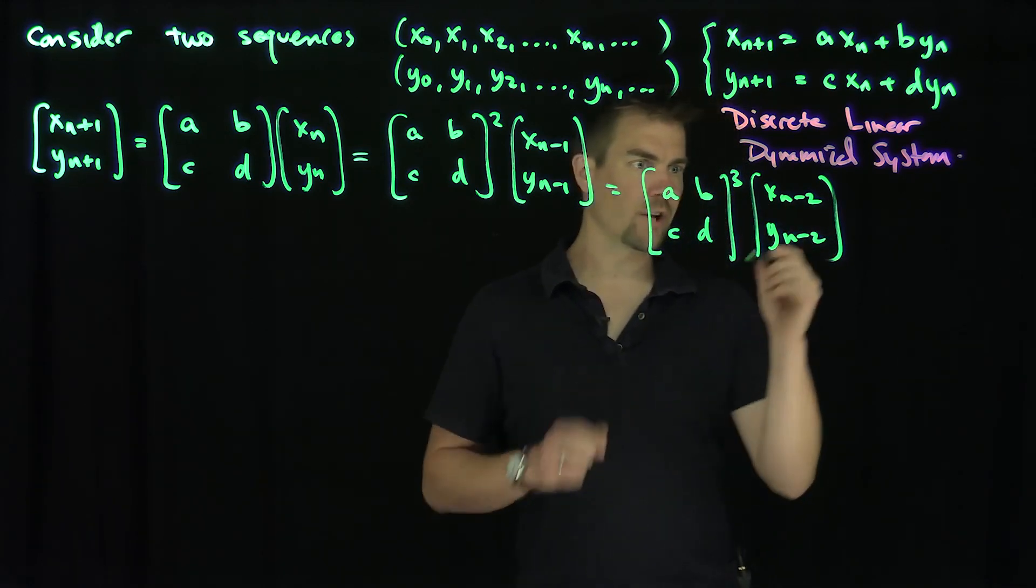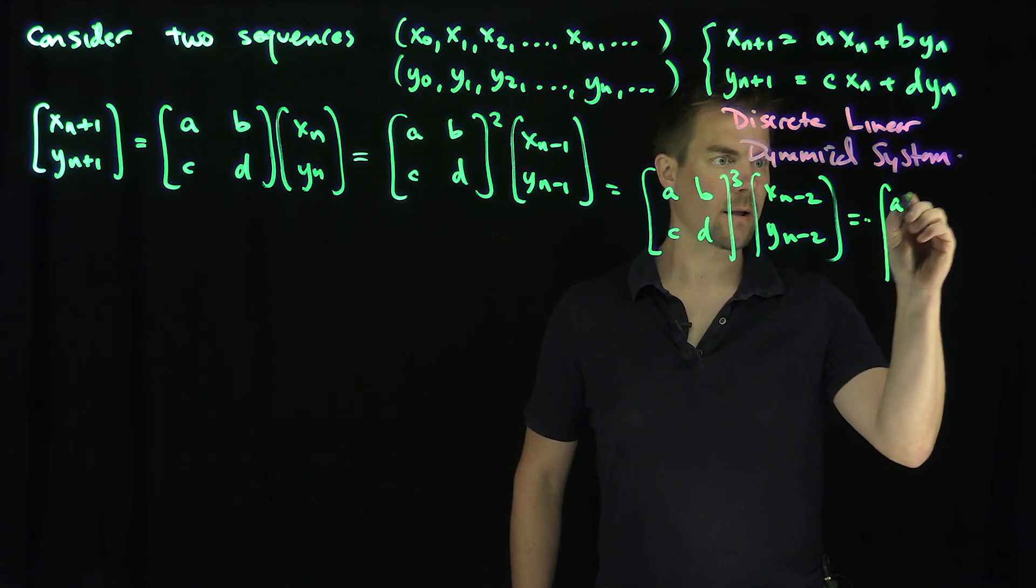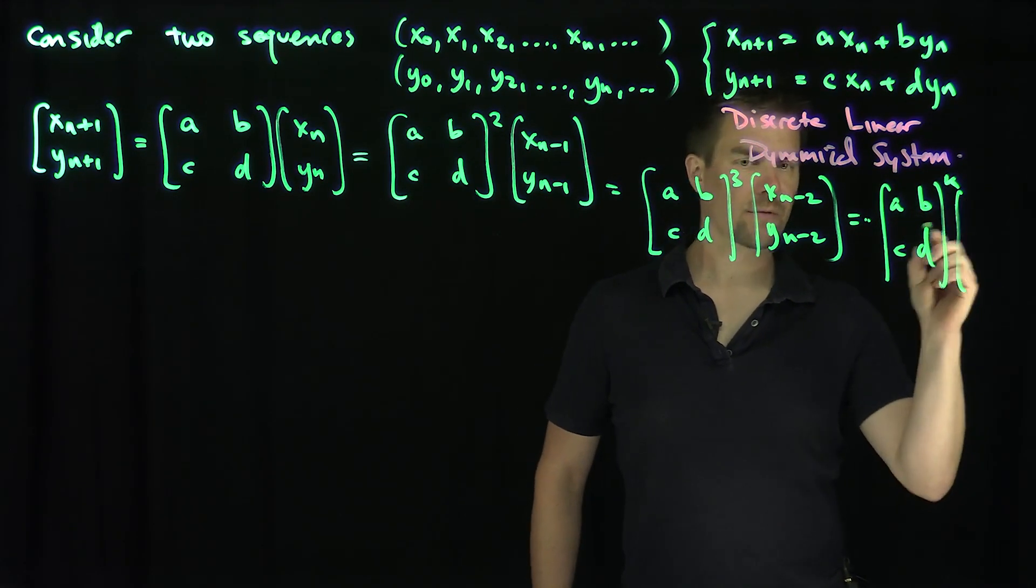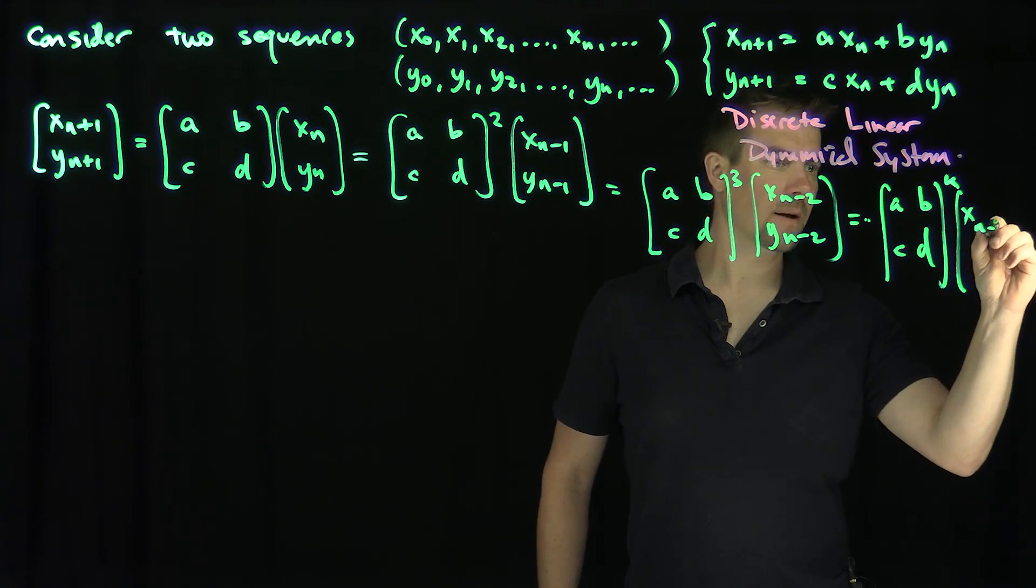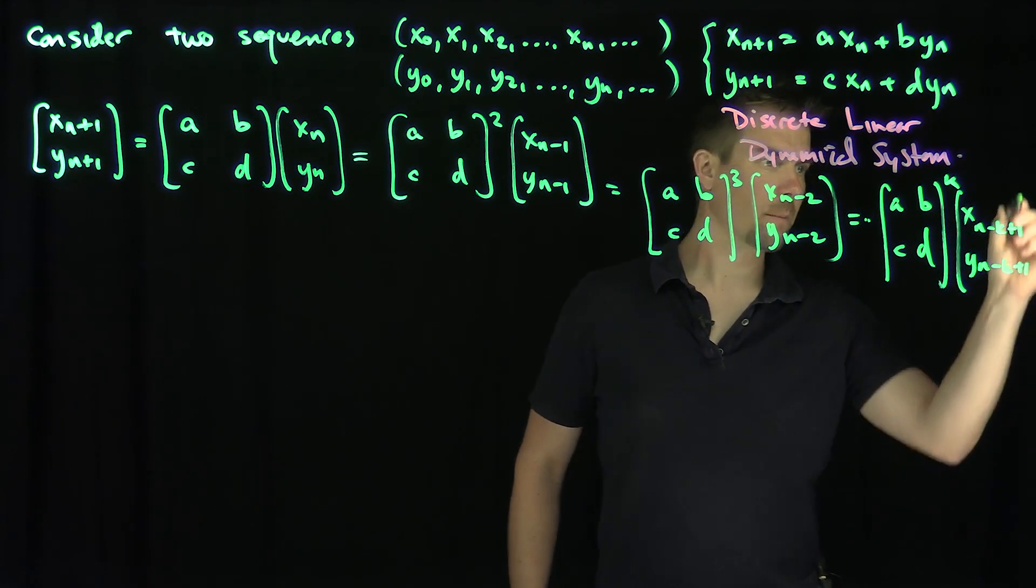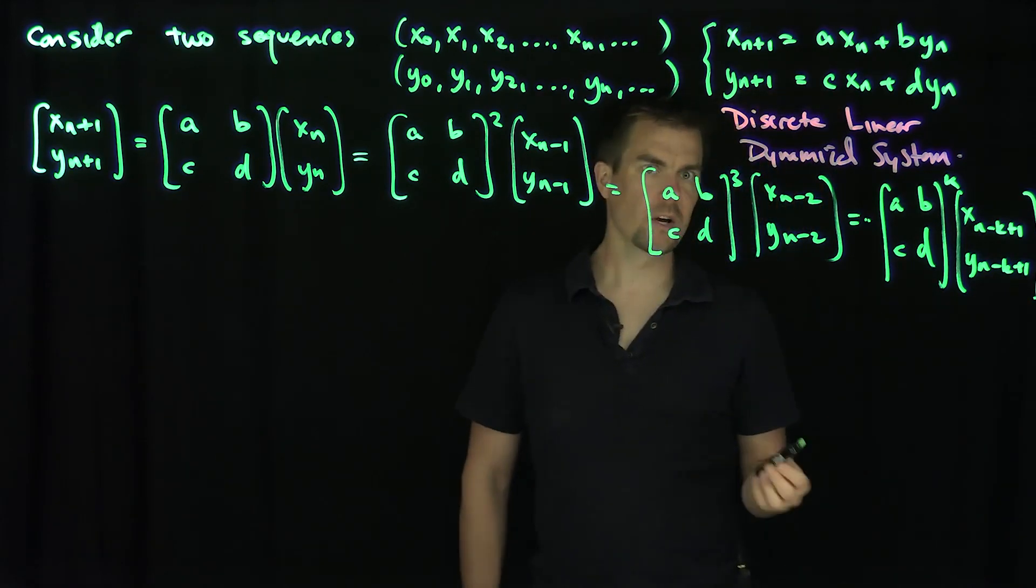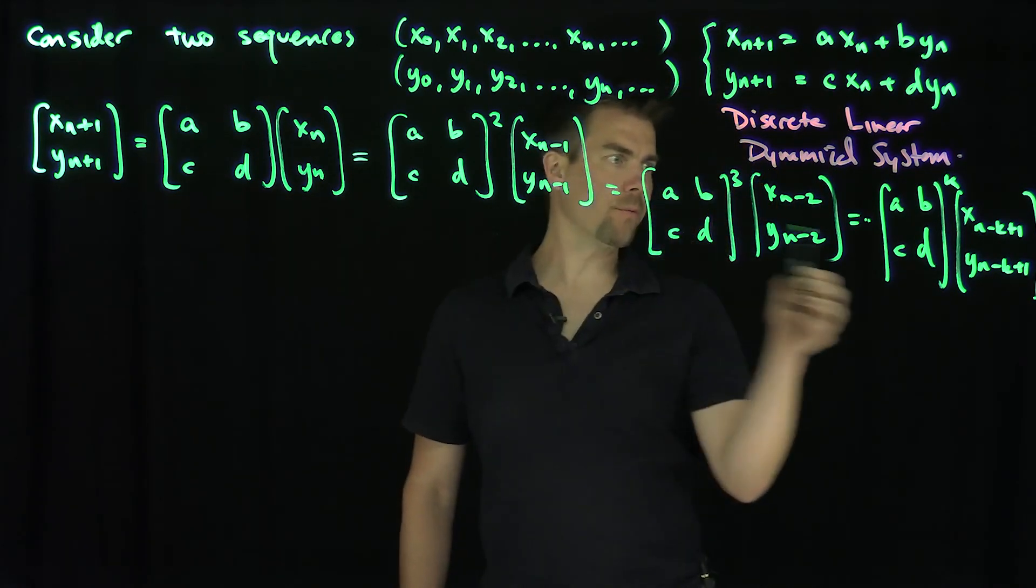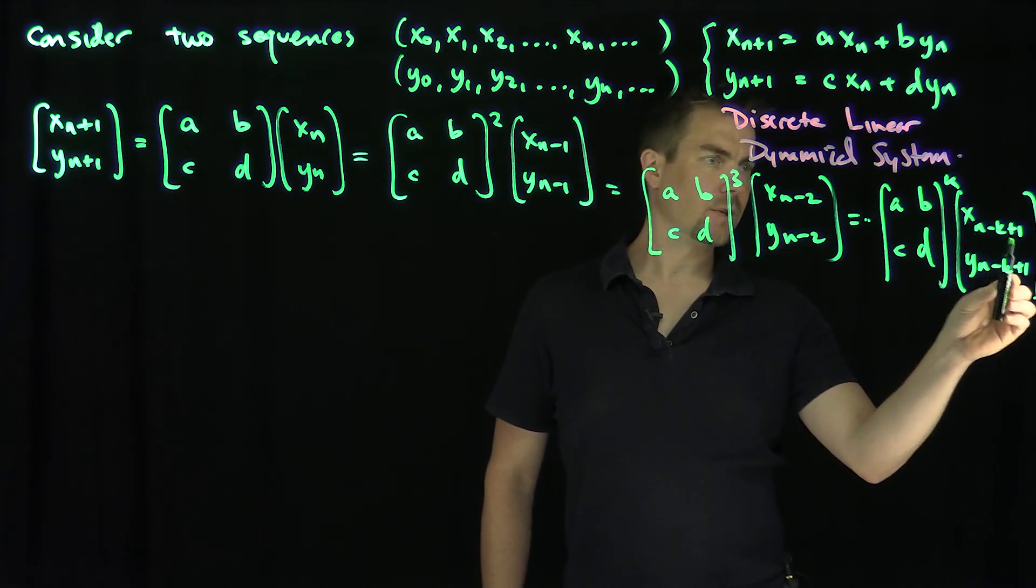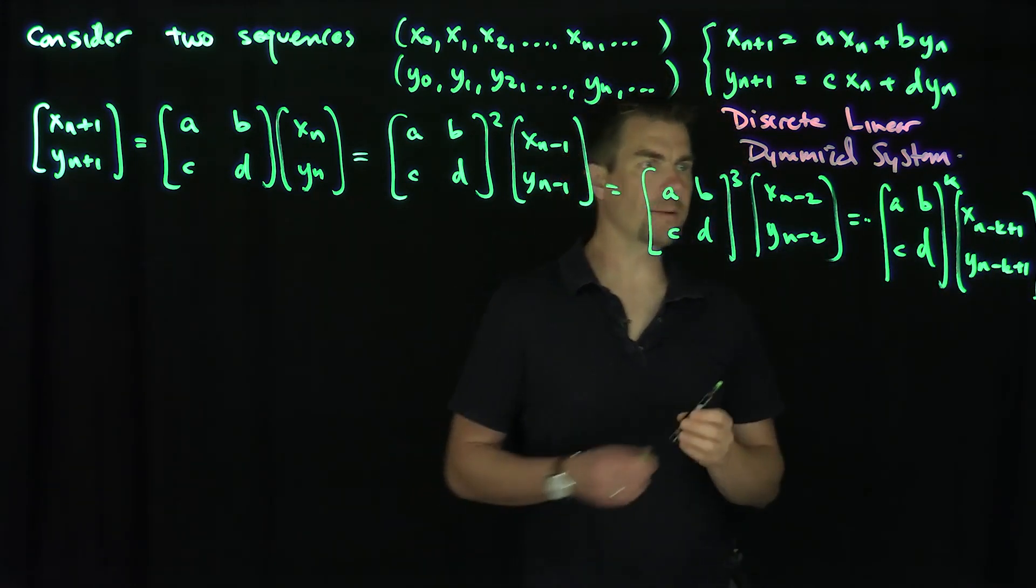So in general, it becomes A, B, C, D to the power of k, and then what's left over here is going to be x n minus k plus 1, y n minus k plus 1. Let's check to make sure this works. When k equals 2 for example, this is going to be minus 2, so minus 1, that's exactly what we get. Excellent.